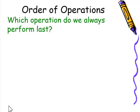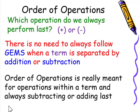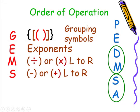Order of operations — which operation do we always perform last? Hopefully you are saying addition or subtraction. There is no need to always follow GEMS when a term is separated by addition or subtraction; order of operations is really meant for operations within a term. In GEMS: G stands for grouping symbols, E for exponents, M for multiplication or division left to right — multiplication does not come before division, it's whichever comes first left to right. S stands for subtraction or addition, also left to right.